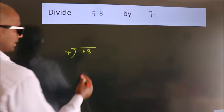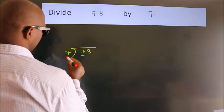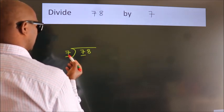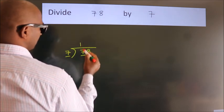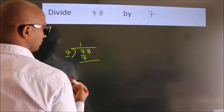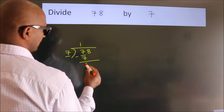Next. Here we have 7. Here 7. When do we get 7? In 7 table. 7 once, 7. Now we should subtract. We get 0.